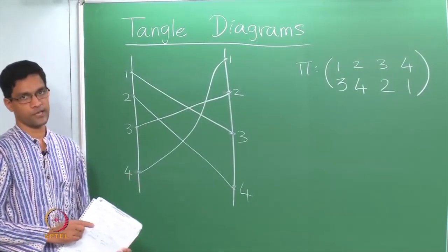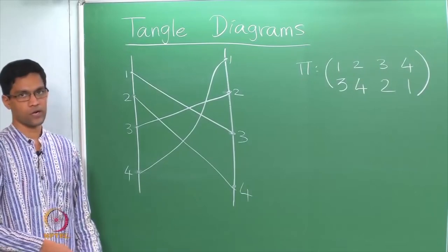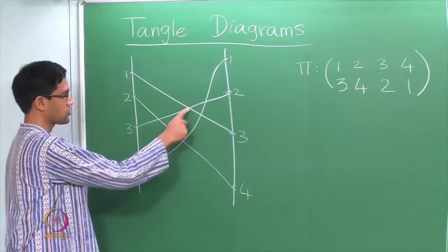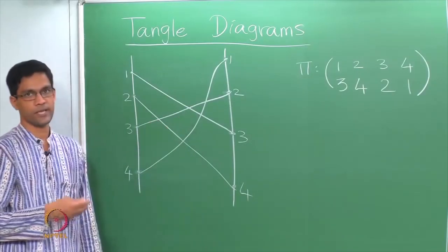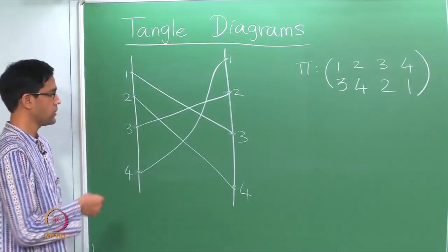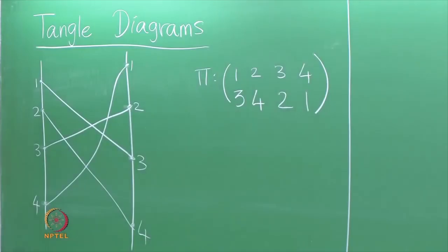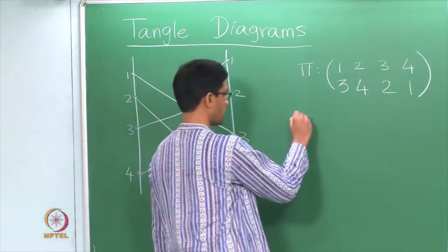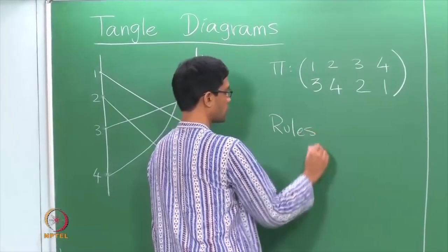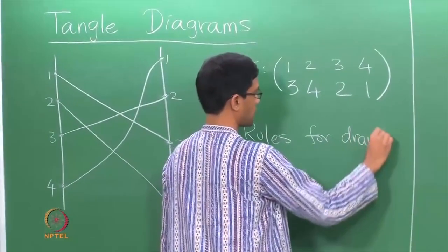The question is what are the rules for drawing these diagrams, because one rule we looked at already: we said it is best to avoid getting 3 or more lines to pass through a single point because that makes counting crossings harder. But we also need to understand what are all the admissible ways of drawing these diagrams.